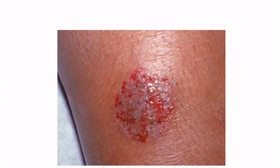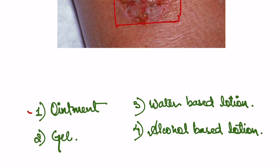Now this is the image for today. In this image you can see there are a few oozing lesions — fluid is coming out from the lesion, a very wet lesion is shown. Now tell me: if you want to treat this condition, which type of preparation are you going to use? Your options are: ointment, gel, or lotion — and in lotion, whether you will prefer a water-based lotion or an alcohol-based lotion.